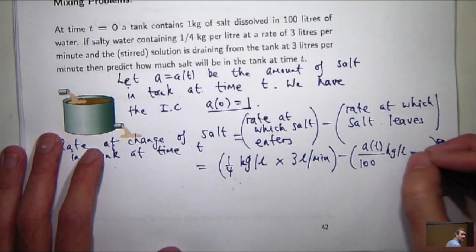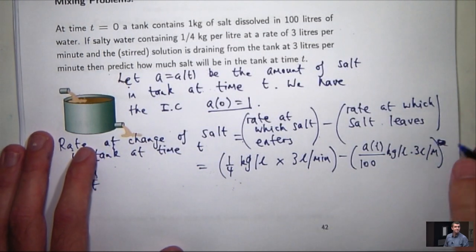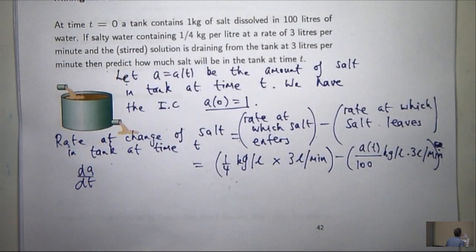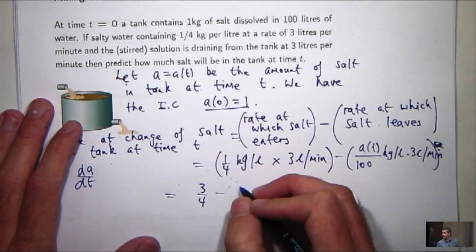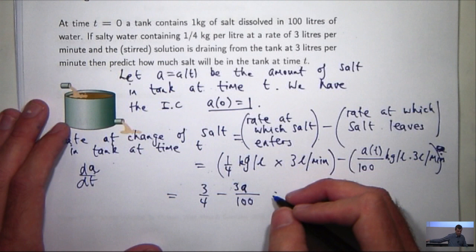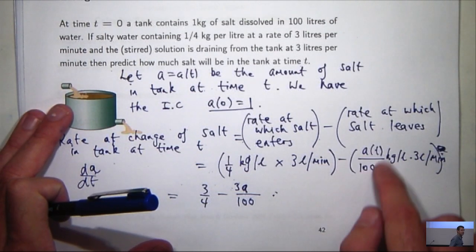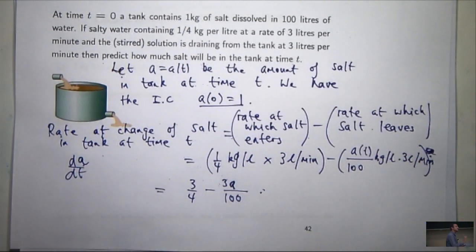Now this will be in kilograms per litre and we need to multiply that by the outflow, three litres per minute. So all you need to do is just, you know, you can get rid of the units if you want to. So you're going to get 3/4 minus 3A on 100. That is it. So think of this here as the concentration of salt. To find the concentration of salt in the tank at time t, you take the amount of salt and divide it by the amount of fluid in the tank at time t.